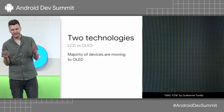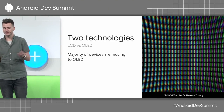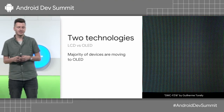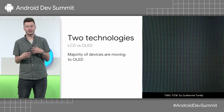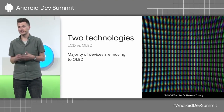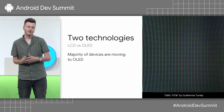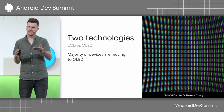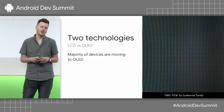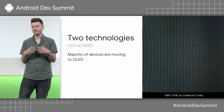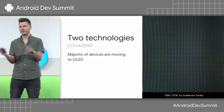There are two prevailing technologies in most devices: LCD and OLED. The majority of devices, especially on Android these days, tend to be OLED screens, particularly from the mid-level to the high-level. And even on other platforms, they're slowly moving to OLED as well.